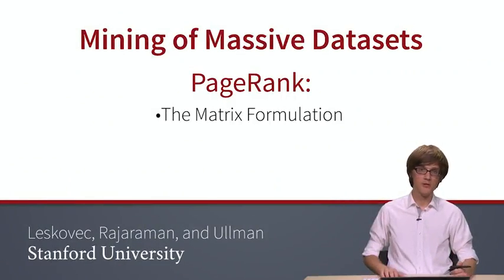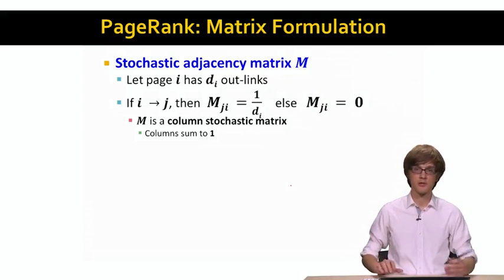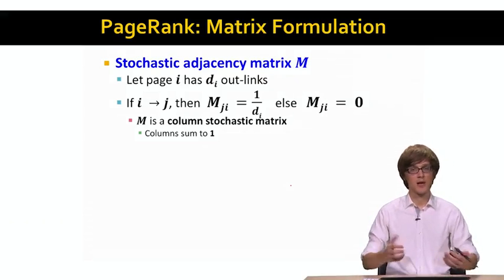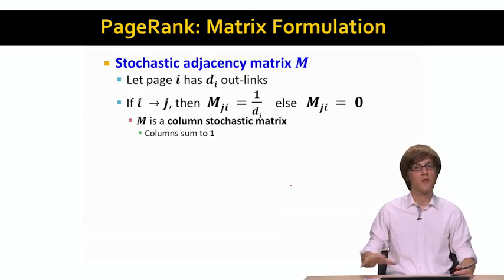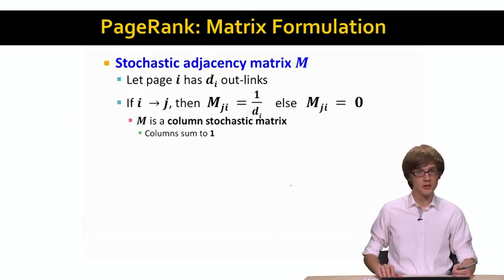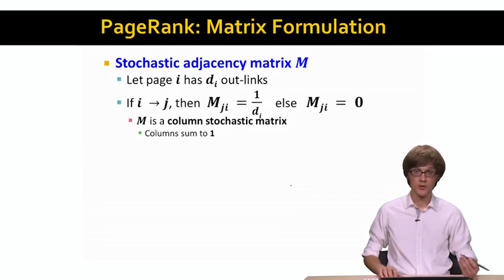In order to come up with a different mathematical formulation of this basic idea of modeling the flow, we will first define what we call a stochastic adjacency matrix M. Then we will express everything in terms of linear algebra, basically the ranks and this matrix M as vector matrix multiplications. We will later see why this is good, because we will be able to start using linear algebra tools to implicitly solve this system of equations that I showed on the previous slide.